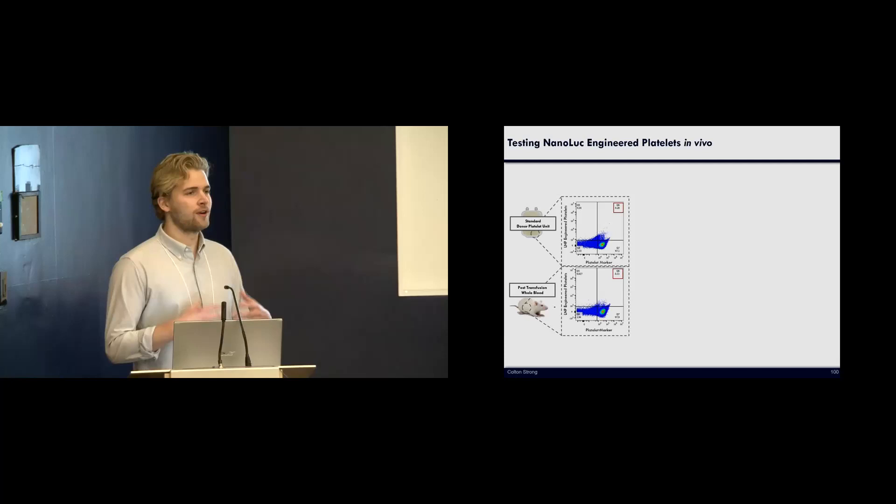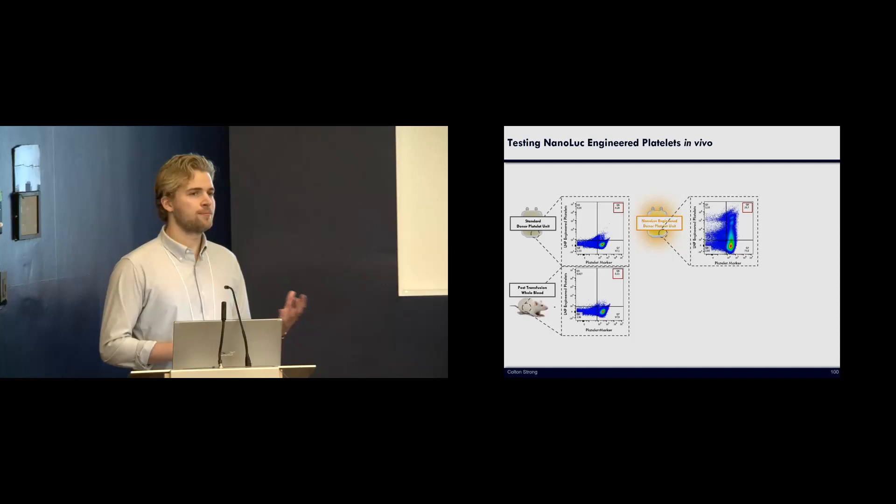One of the more interesting parameters that we also looked at was the circulation of these LNP-engineered platelets in vivo. And the way we did this is we used a platelet-specific marker and then marker of LNP-engineering. Depicted on the screen right now are the control platelets, and so we have our standard platelet unit and then also our post-transfusion whole blood. And anything in the upper right quadrant represents the co-localization of these two markers or a marker of transfection. And as you can see, when we look at our nanoluciferase engineered platelet unit, we can see that we get about 20% transfection efficacy in our platelet unit.